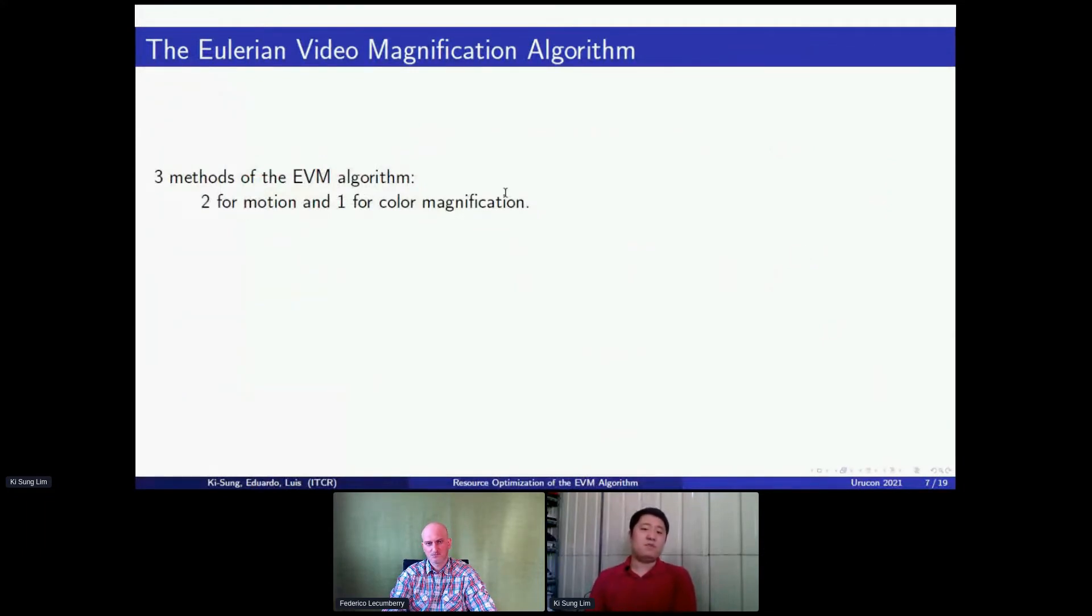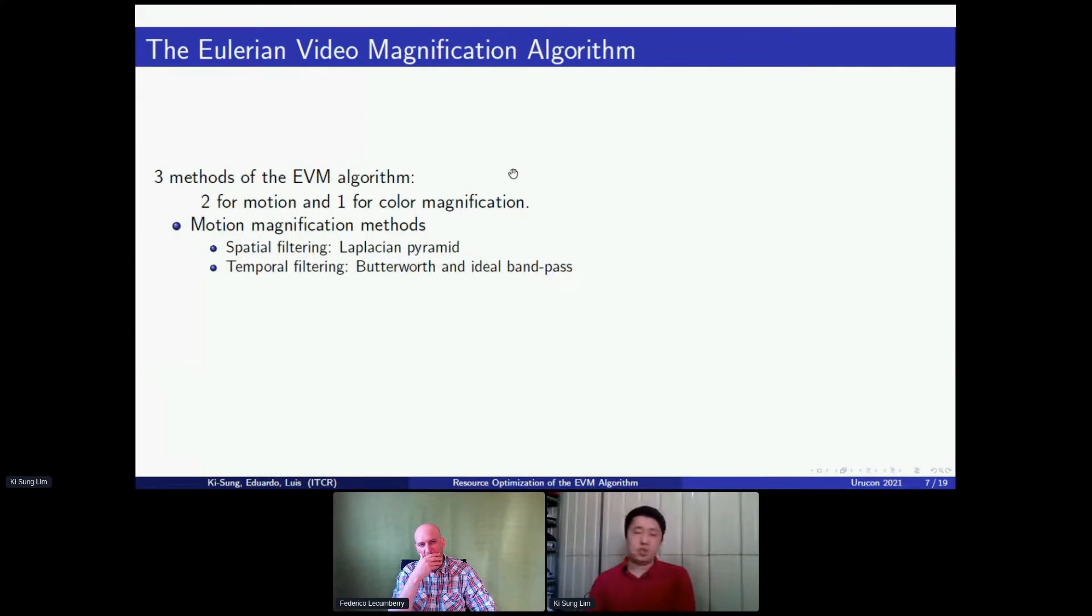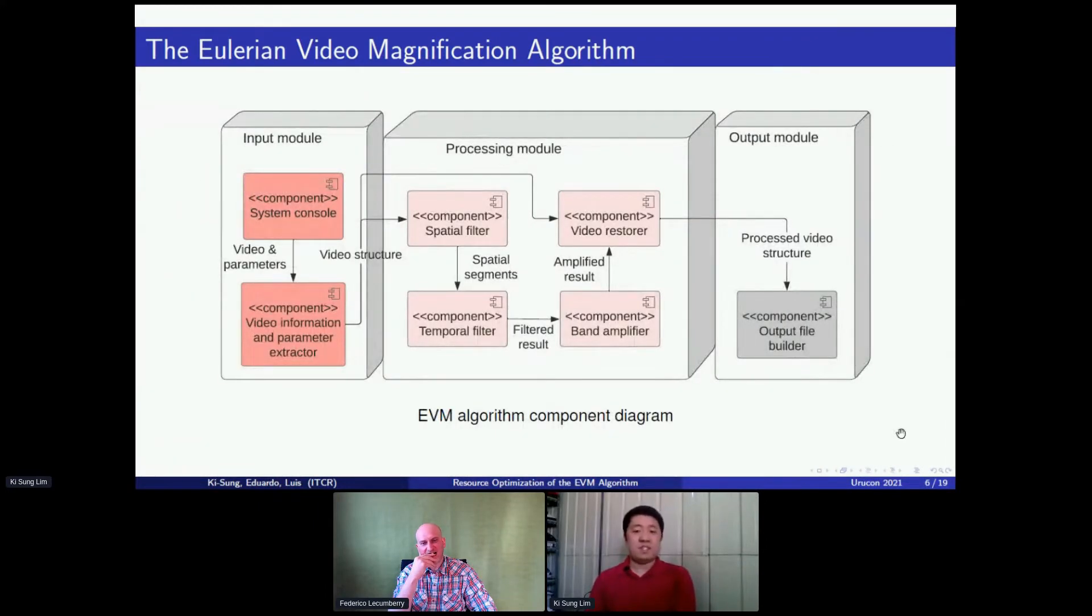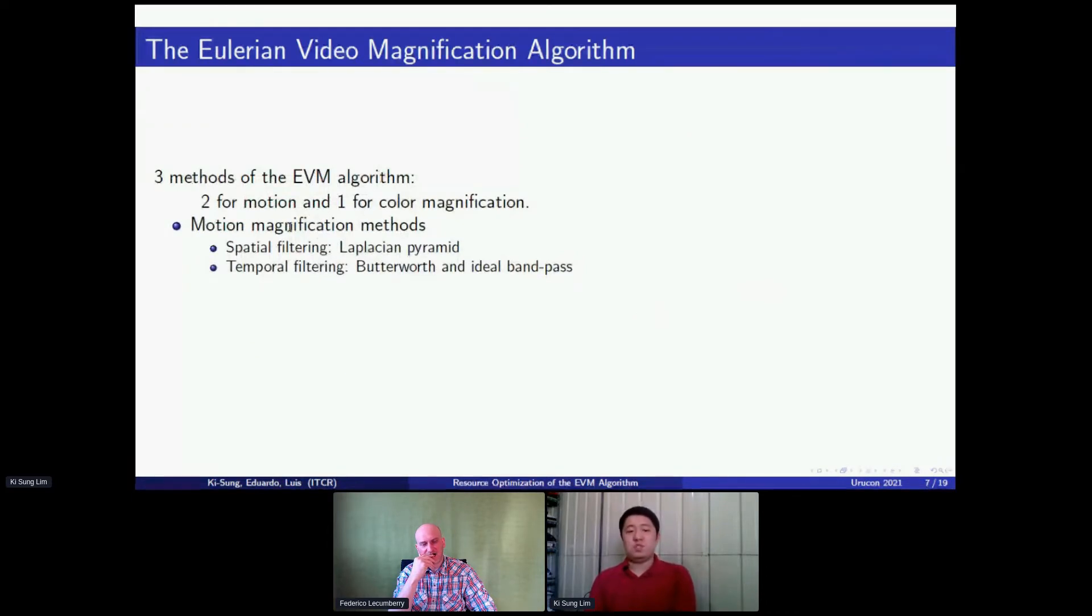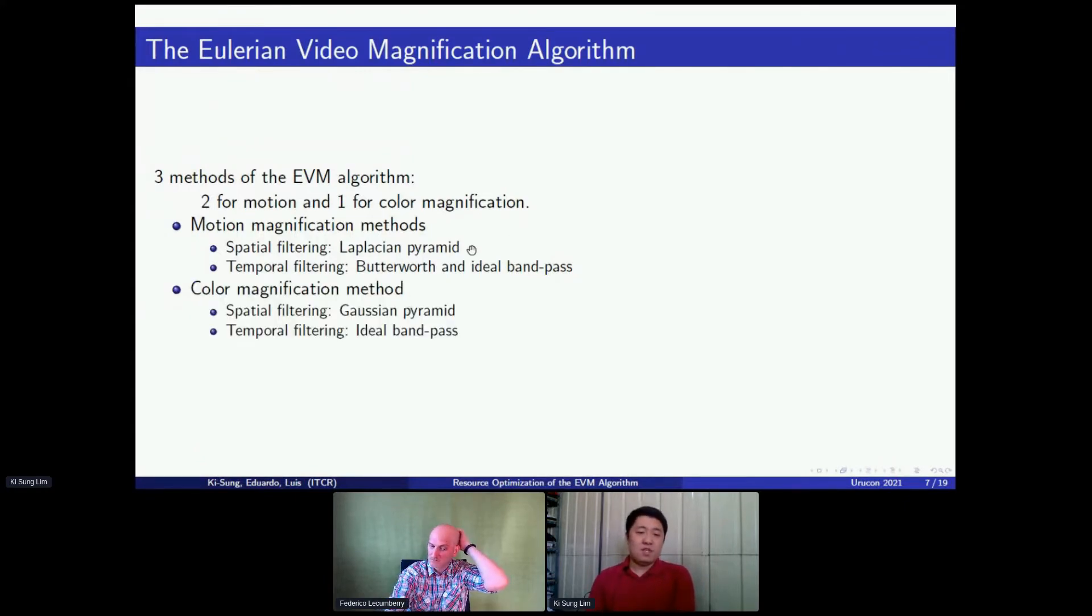For the methods of the Eulerian magnification algorithm, we have two for motion magnification and one for color magnification. With the motion magnification, using the base structure that we presented, we use a Laplacian pyramid for spatial filtering for edge detection. For temporal filtering, we use for the first method butterworth bandpass, and for the second method we use ideal bandpass. For the color magnification method, the ideal bandpass is sufficient.